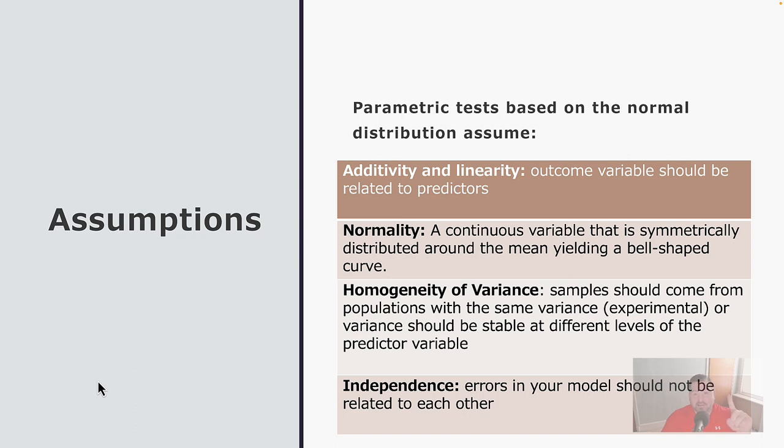And they are additivity and linearity, normality, homogeneity of the variance, and independence. So additivity and linearity occurs when we have an outcome variable, dependent variable, should be correlated with its predictors. So basically, if a variable is correlational in nature, and we're going to go through some of the procedures that involve correlation and regression later on in the term, but the input should be related to the output. If they don't relate, then how can we make any type of determination based off of that? You can't. So the test doesn't work in the way it's supposed to work.